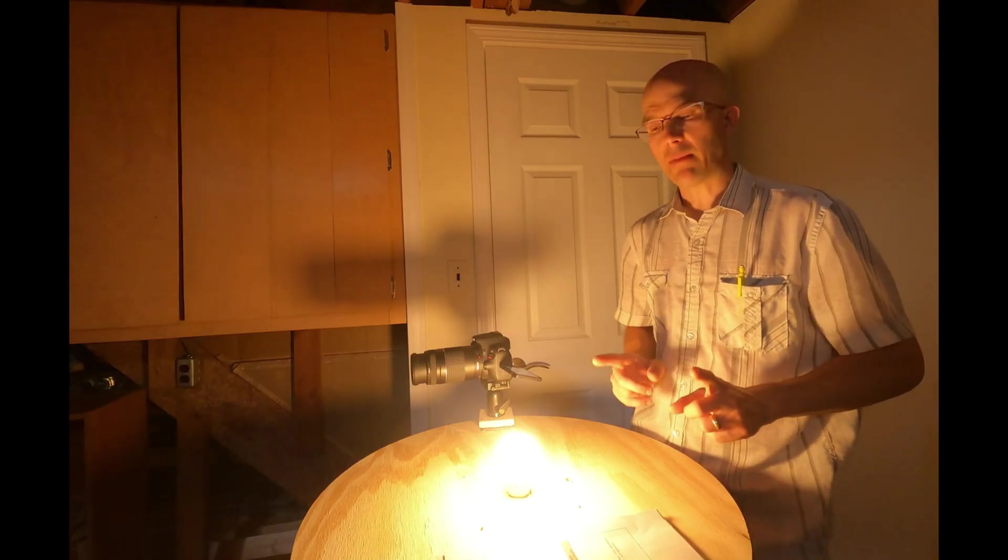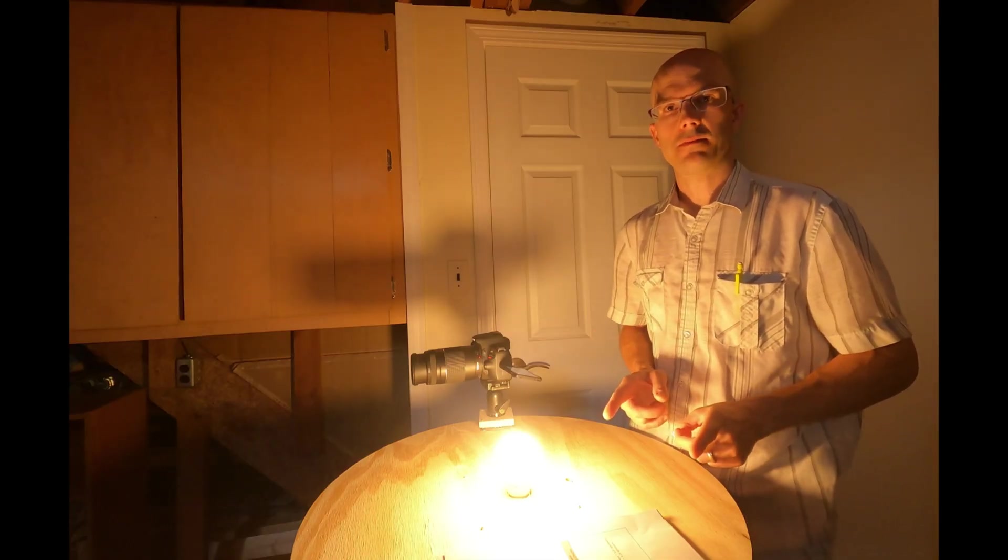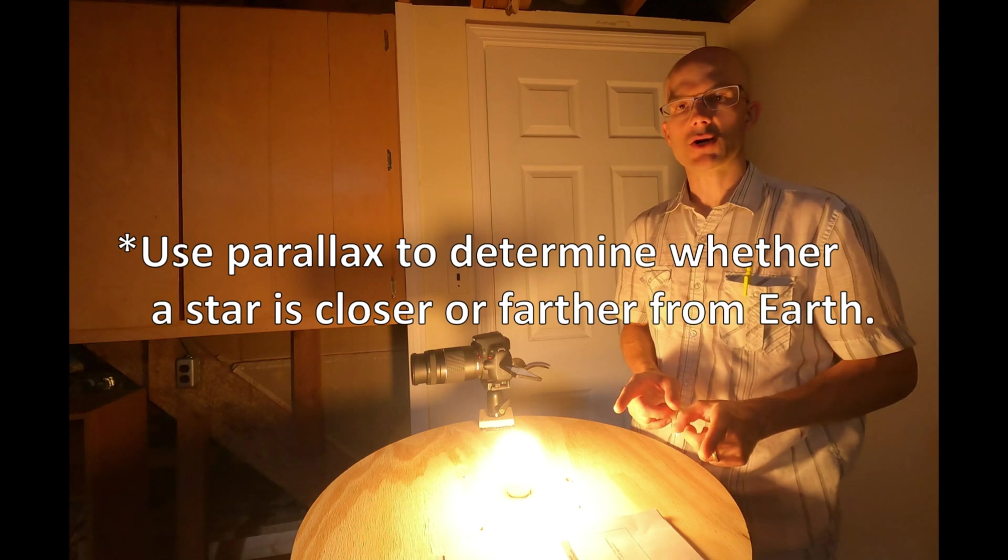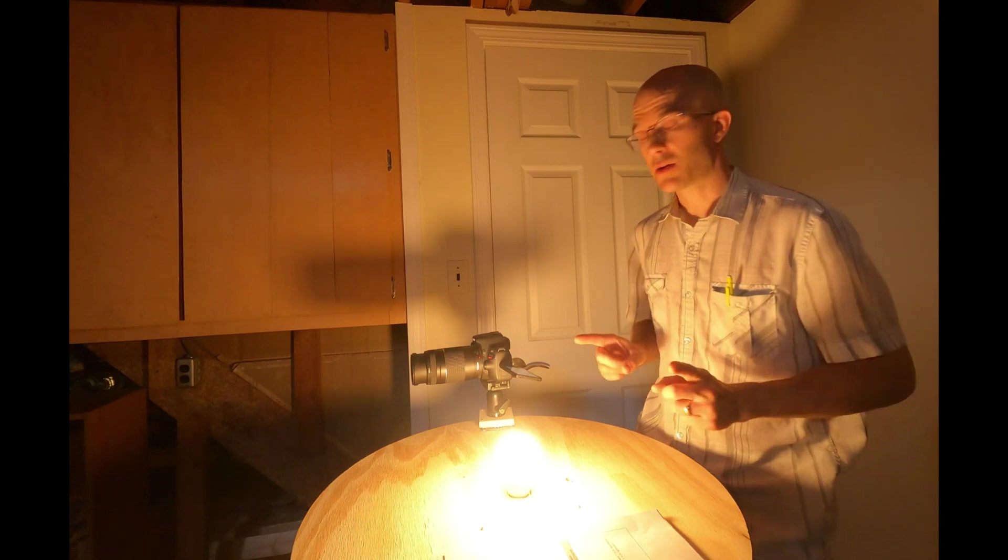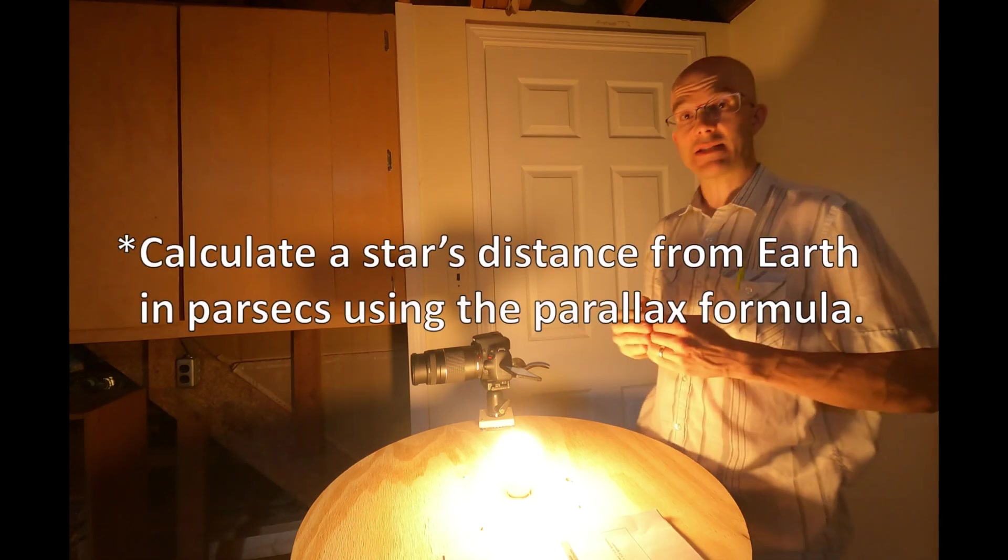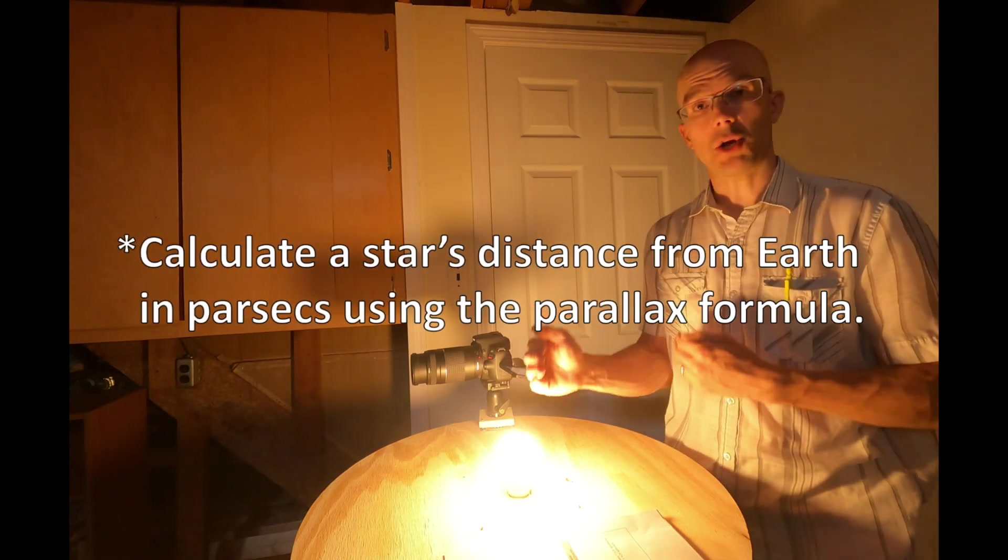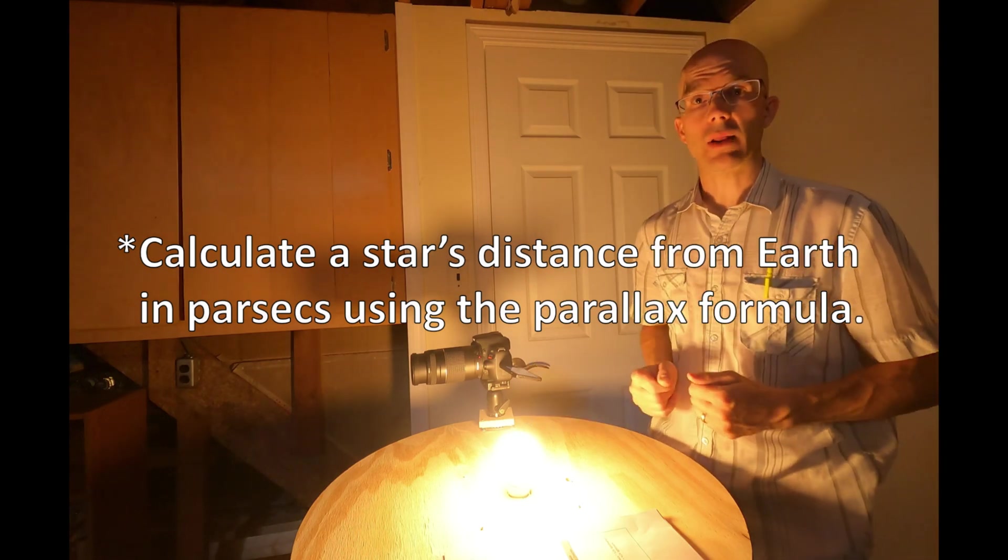At this point, you should have met the first goal of this video. You should be able to use parallax to determine whether a star is closer or farther from Earth. Next, we want to be able to calculate a star's distance from Earth in a unit called parsecs using the parallax formula.